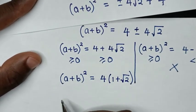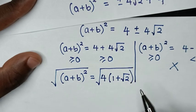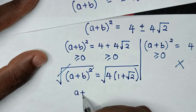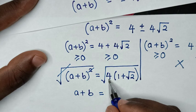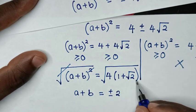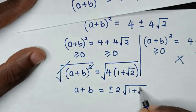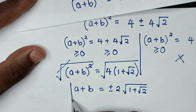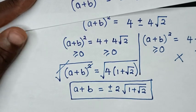Then in the next step we apply square root on both sides, so the square cancels and it will be a plus b is equal to plus or minus 2 times the square root of (1 plus root 2). So this is the final answer for the value of a plus b. Thank you.